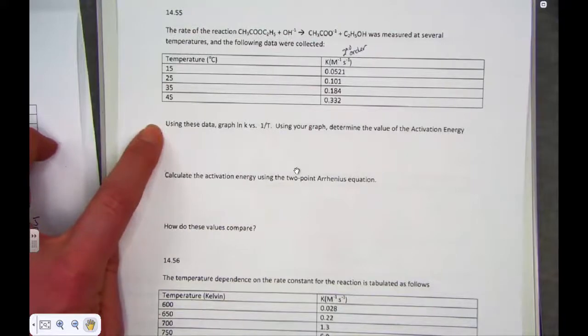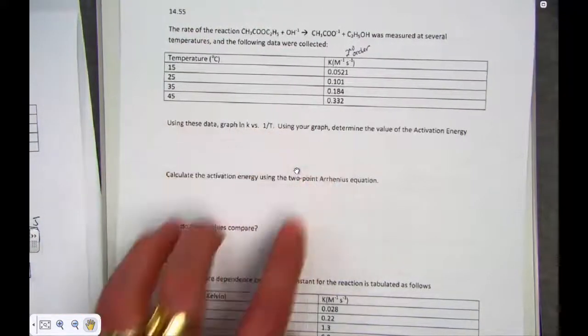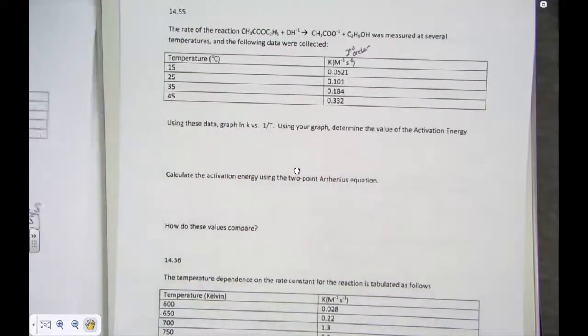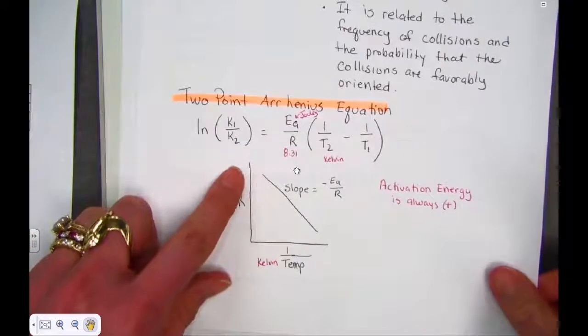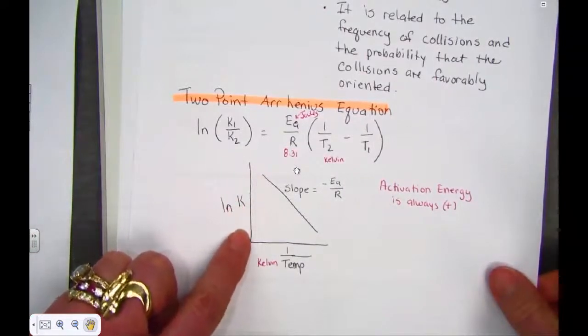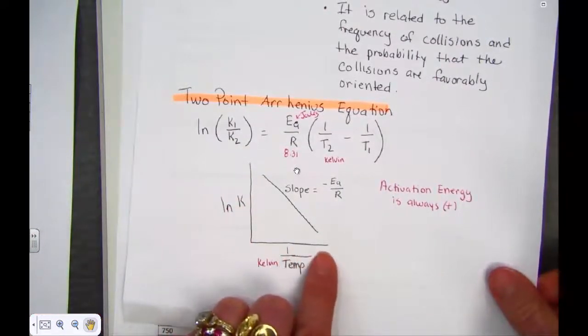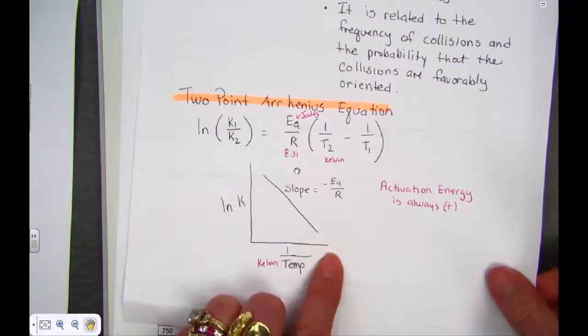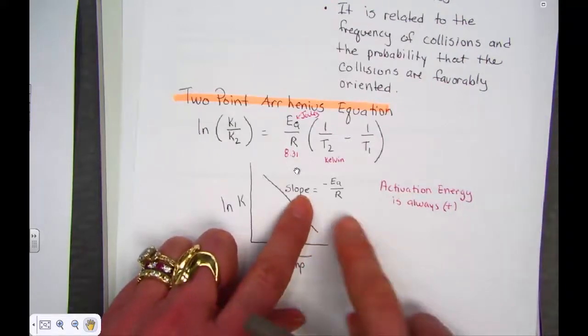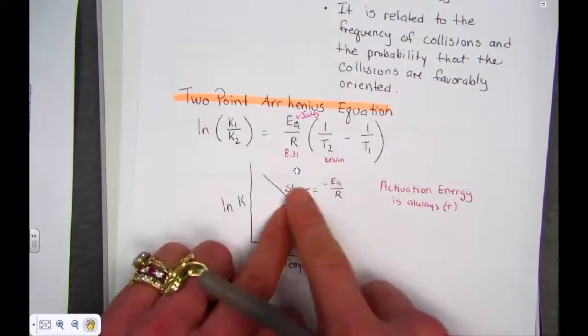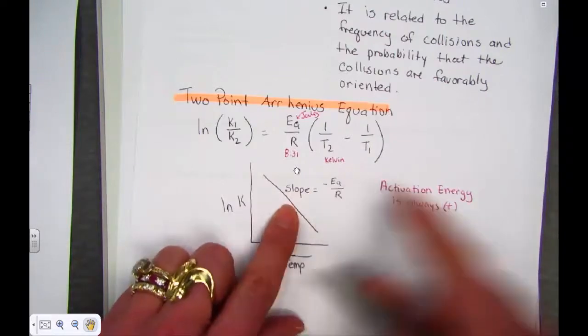Using this graph, the natural log of K versus one over the temperature, to use the graph to find the activation energy. We want to generate a graph where we have natural log of K on the Y and the reciprocal of the Kelvin temperature on the X. When we run a linear regression, Y equals MX plus B, we can find the slope. Once we know the slope, we can plug it into this formula to solve for the activation energy.